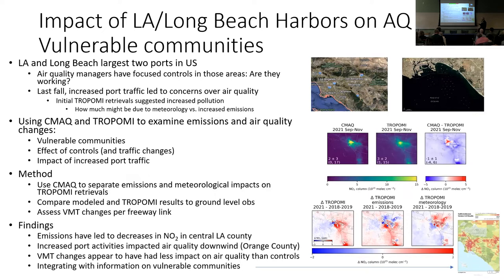One of the questions was how much of the TROPOMI difference between years — looking at the impact of shipping on air quality — was due to meteorology versus changes in emissions. By combining TROPOMI changes in NO2 vertical column densities between 2021 and the average of 2018 and 2019 — essentially comparing pre-COVID and post-COVID — we were able to use CMAQ to separate that into how much was due to emission changes versus meteorological changes.